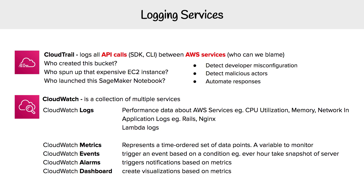CloudWatch Logs is a durable storage solution for your logs. Logs could be performance data about your AWS services such as CPU utilization, memory, or network in. You could also store your application logs here — if you're running Ruby on Rails you could send the logs there, or Nginx as well. Or if you're using Lambda, you can put console log calls within your functions and that would pass them on to CloudWatch — that's application logs for Lambdas.